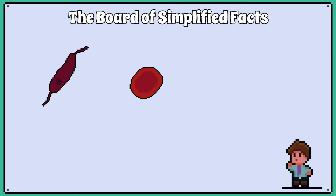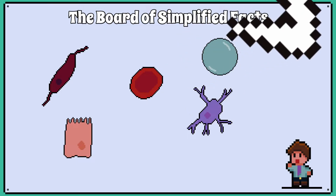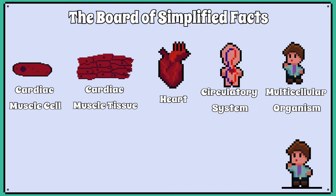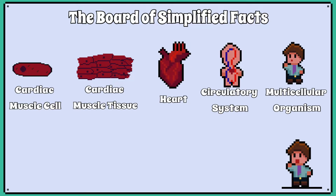By the end of year 10, you should have encountered enough different specialised cells that you can recognise some of those adaptations. You will also need to understand the levels of organisation within organisms regarding how cells organise themselves to become fully functioning multicellular organisms. You have to learn this order of organisation.